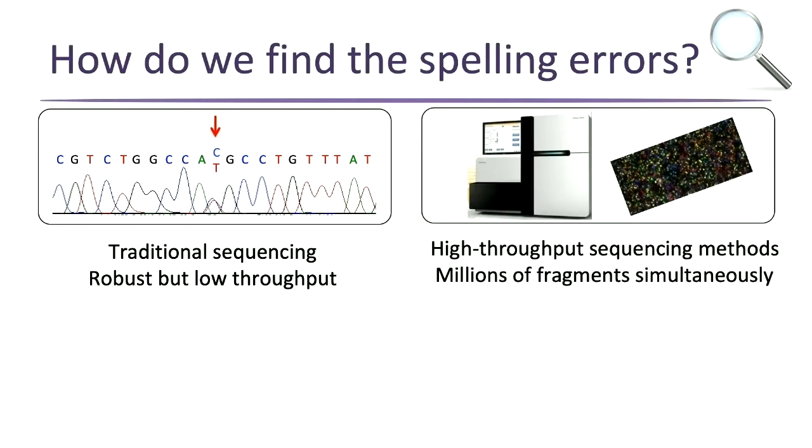About 10 years ago, a new technology came on the scene — called high-throughput sequencing or next-generation sequencing — developed in part by people who work in this building. It allows us to sequence millions and millions of pieces of DNA at the same time, and a computer reads and spits out the sequence and tells you where the changes are.